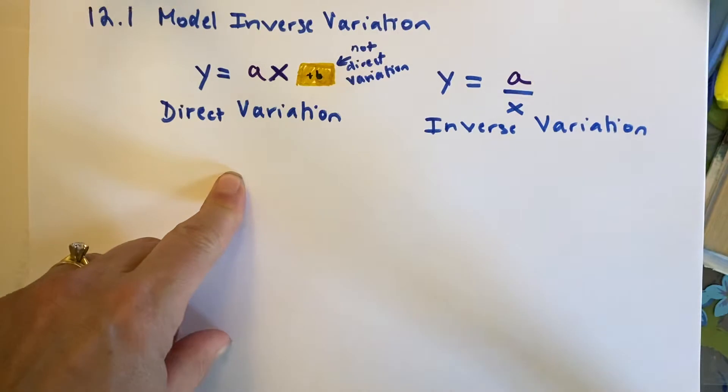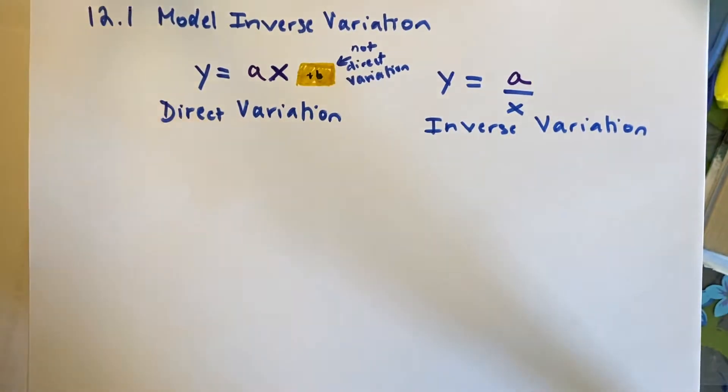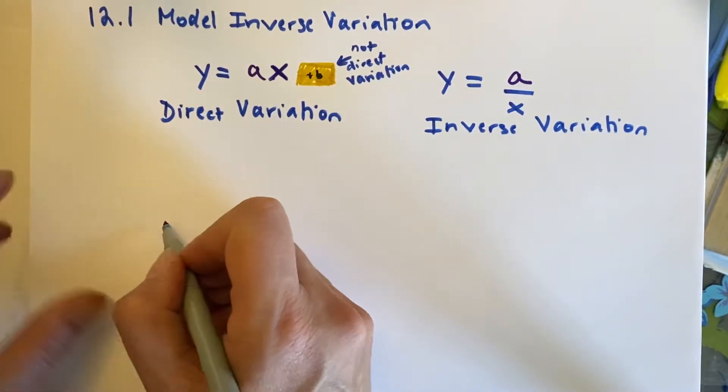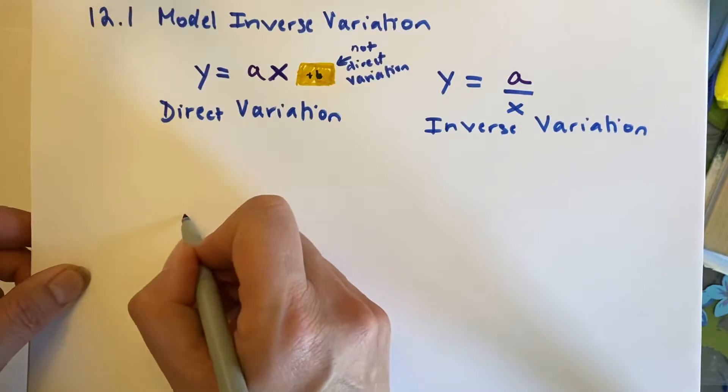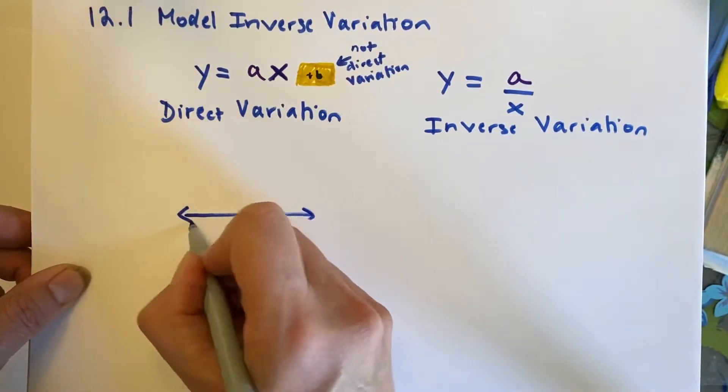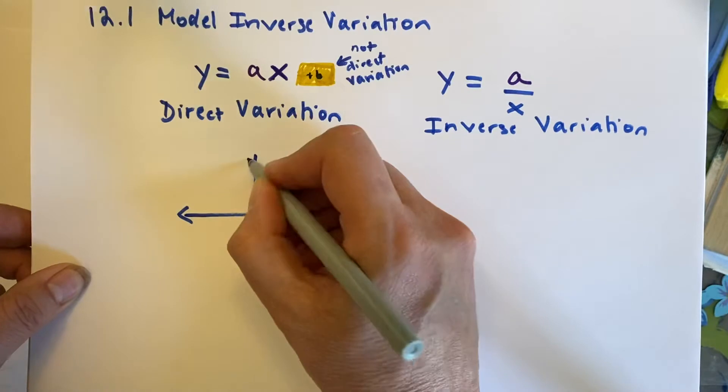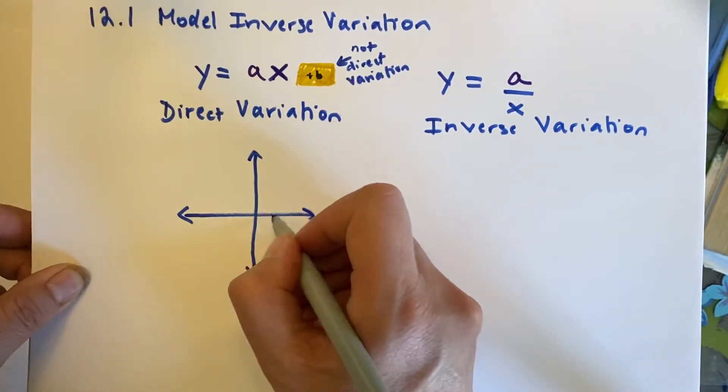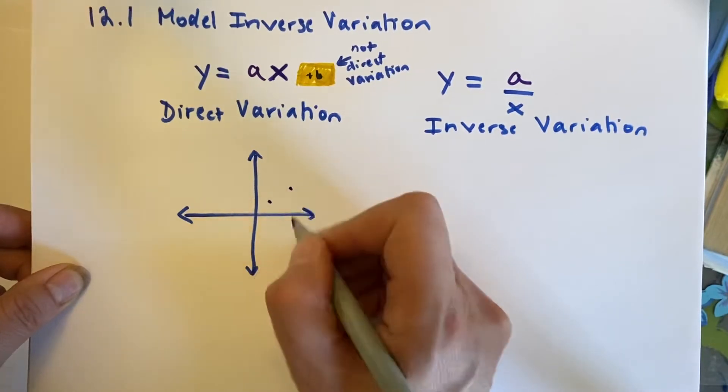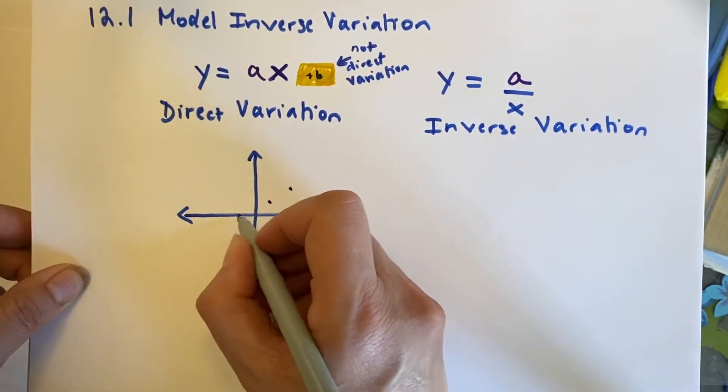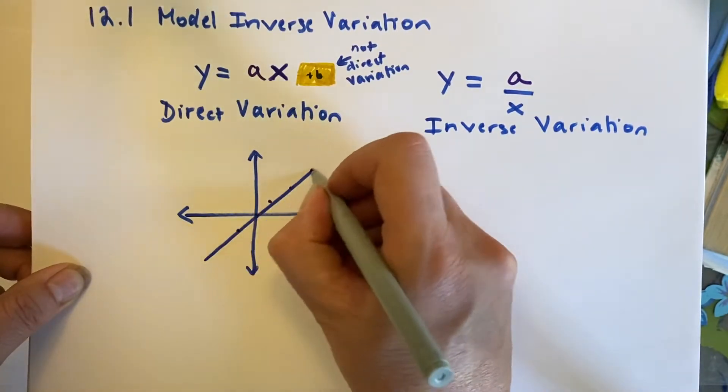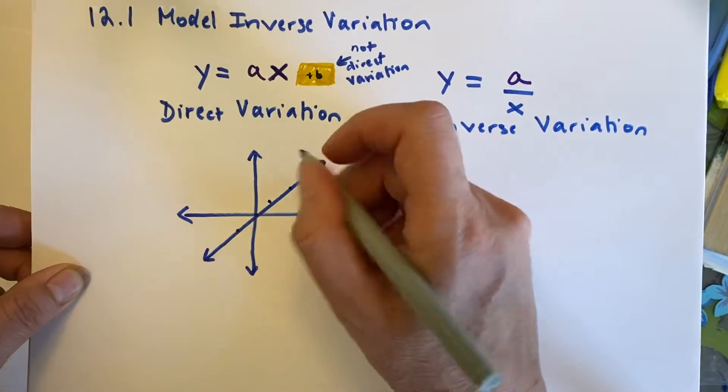But this is nevertheless linear. A direct variation is linear, and you guys can tell if x is 1, y is 1. So, if we're to draw this, if x is 1, y is 1, if x is 2, y is 2, if x is negative 1, y is negative 1, if x is 0, y is 0, and you can see this just makes a line.